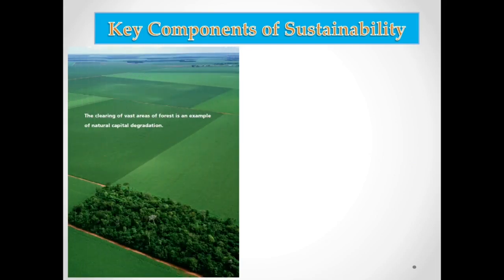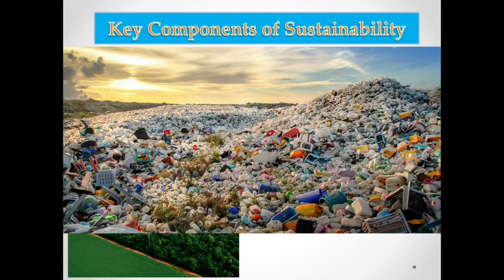An example of natural capital degradation is clearing vast areas of forest. Because we want to construct buildings or develop areas, parts of our forests have already been cleared due to industrial activities and construction — including tourist spots. We can see deforested areas on our mountains, which is another example of natural capital degradation.